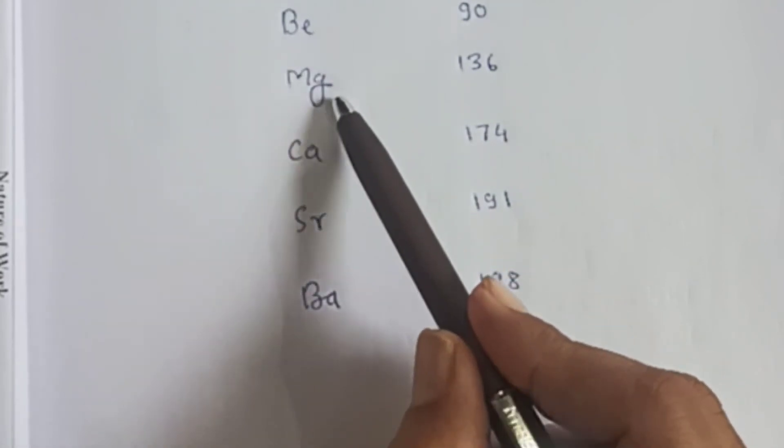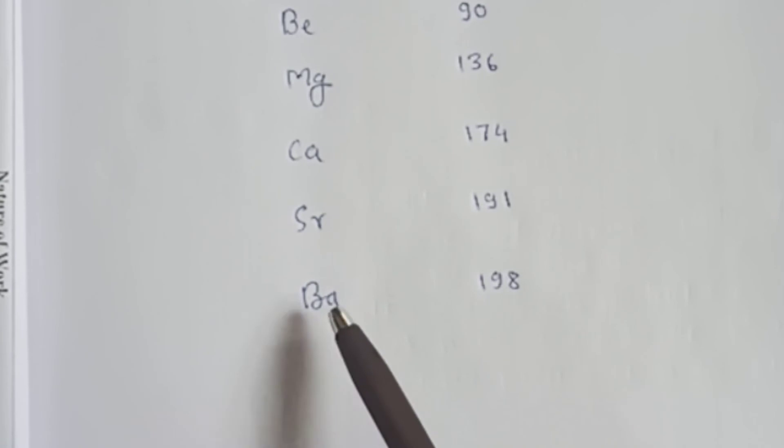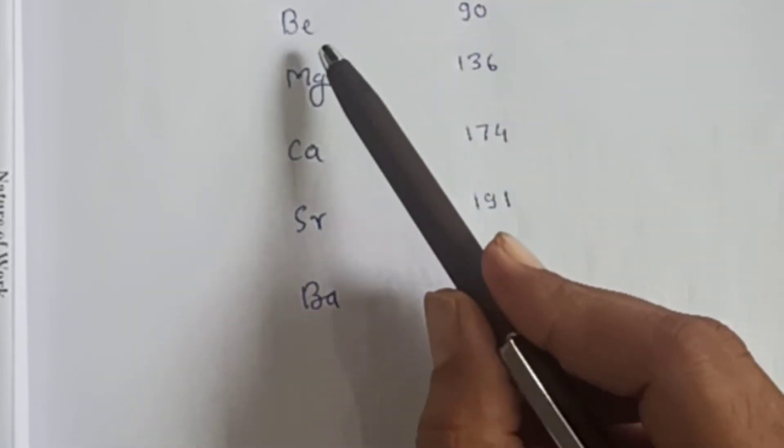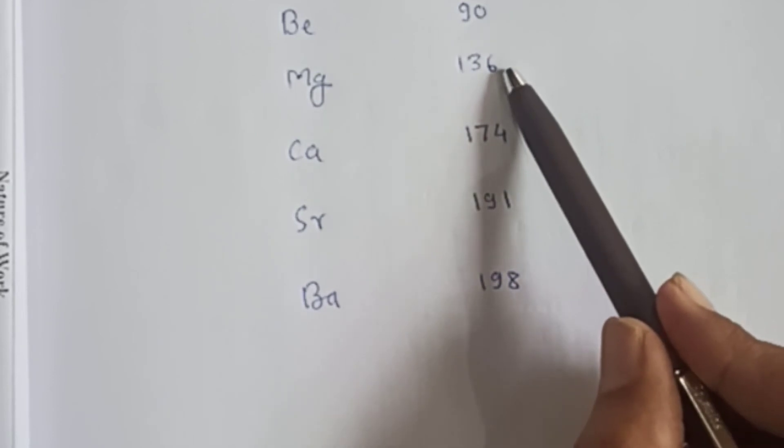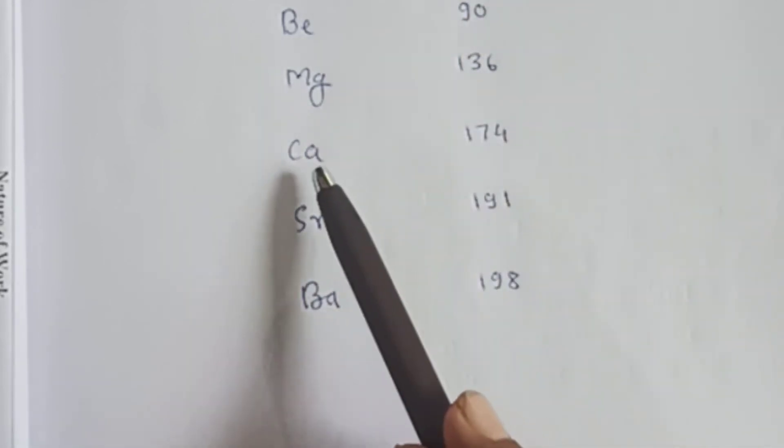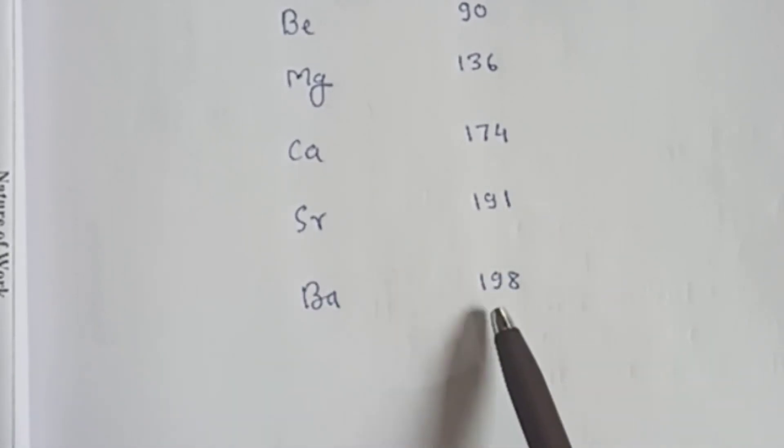Consider the second group: beryllium, magnesium, calcium, strontium, and barium. Atomic size - beryllium has 90 picometers, magnesium 136, calcium 174, strontium 191, and barium 198.